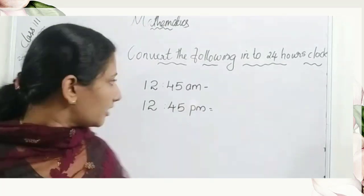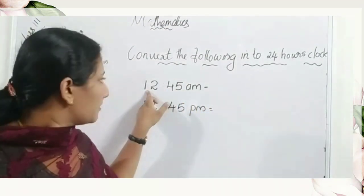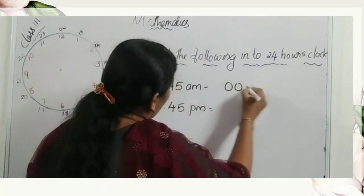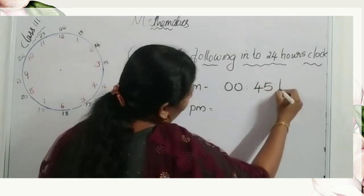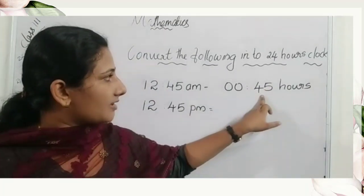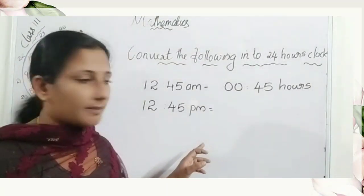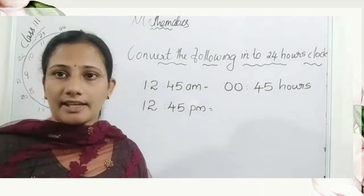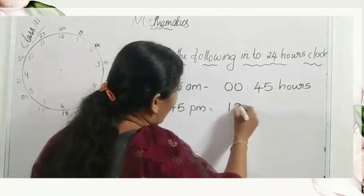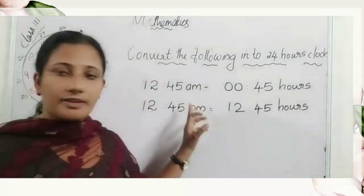Twelve forty-five a.m. — how do we convert into the twenty-four hour clock system? We know twelve a.m. equals zero, so the forty-five minutes stay. Twelve forty-five a.m. becomes zero zero forty-five hours. Now, twelve forty-five p.m. — there are no changes up to twelve fifty-nine p.m., so twelve forty-five p.m. is written as twelve forty-five hours. That is the difference between these two times.